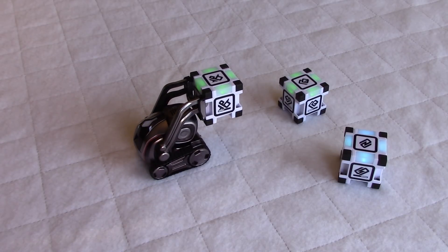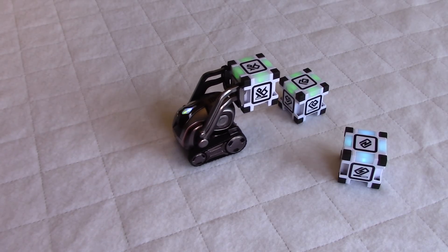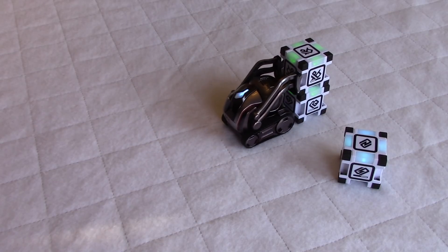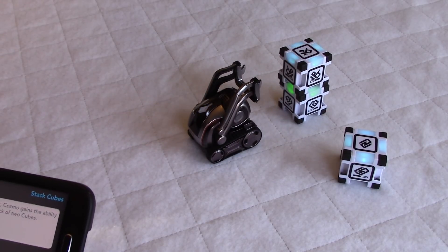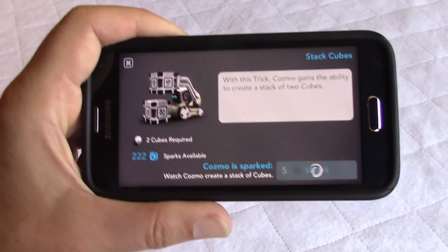When a cube is blue, it means that Cozmo saw it. When a cube turns green, it means that Cozmo wants to interact with the cube. So we'll see what happens now on the app.